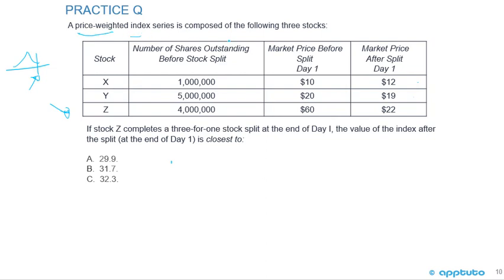A price weighted index is composed of three stocks: X, Y, and Z. The market price before the split on day one is $10 for X, $20 for Y, and $60 for Z. After a three-for-one stock split on Z, the market price after the split on day one is $12 for X, $19 for Y, and $22 for Z. What is the value of the index after the split? A, $29.9; B, $31.7; or C, $32.3.